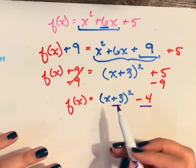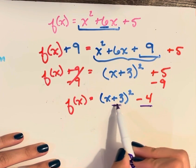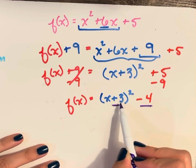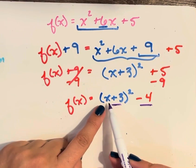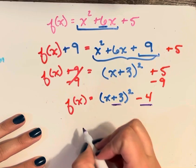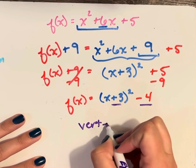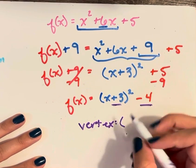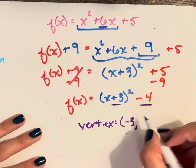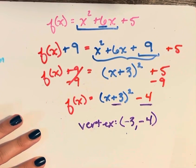So if you recall from class, we take the opposite of whatever this number is because vertex form here is actually x minus h squared. So the vertex is going to be negative 3, negative 4.